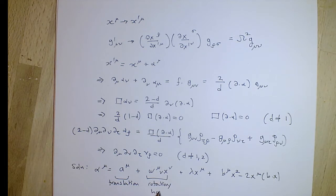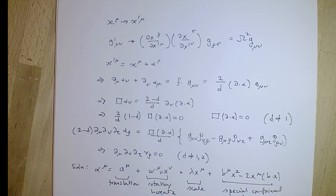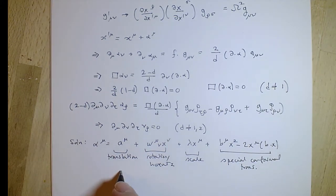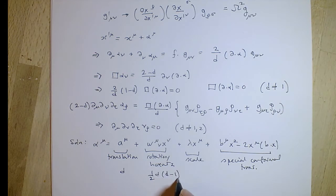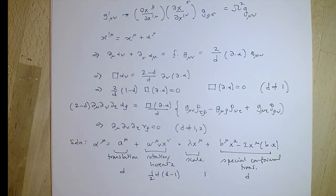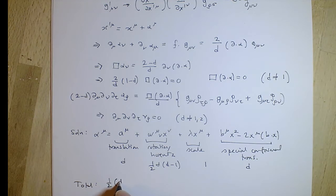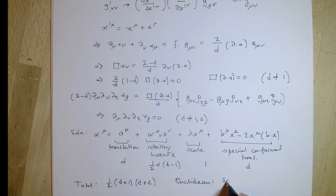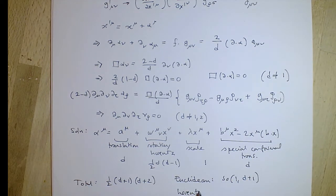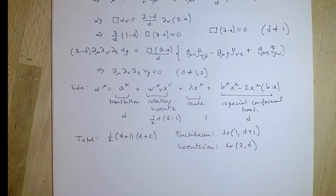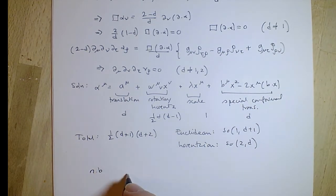There'll be exercises to go through how to work those out and how to exponentiate them. You can count the number of parameters and find it's one-half d+1 times d+2, corresponding to the Euclidean conformal group being SO(1, d+1) and the Riemannian conformal group SO(2, d). Euclidean and Poincaré transformations can be extended by scale transformations and by special conformal transformations.